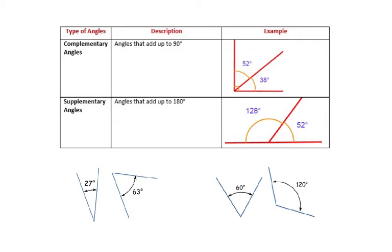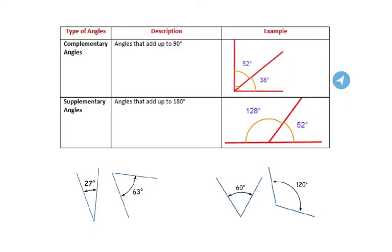Next, we have supplementary angles. These are angles that add up to 180 degrees. So in this example, we've got a 128 degree angle and a 52 degree angle. These add up to 180. In these two examples, we have what are called adjacent angles, or angles that are next to each other.